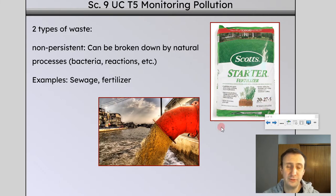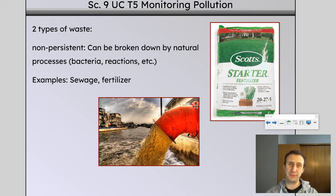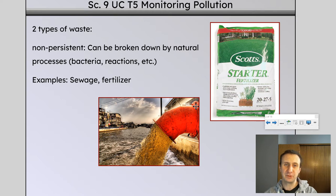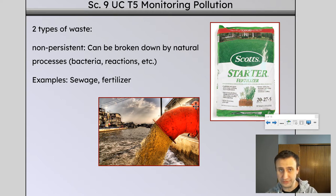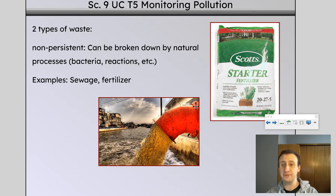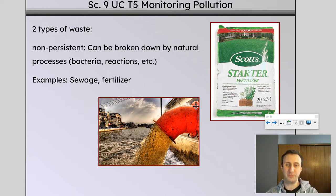Let's get into it. Two types of waste — we've already talked a little bit about this, especially with the pesticide project. We have non-persistent, which means it can be broken down by natural processes, whether that's bacteria or reactions. Essentially, it doesn't stick around for a long time; it can be broken down relatively quickly.